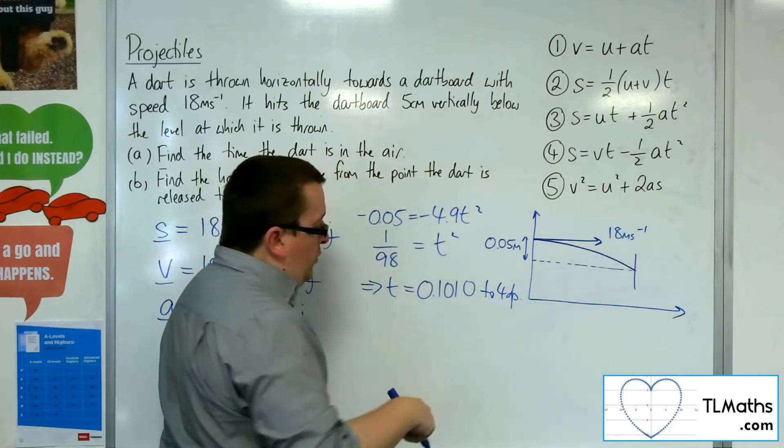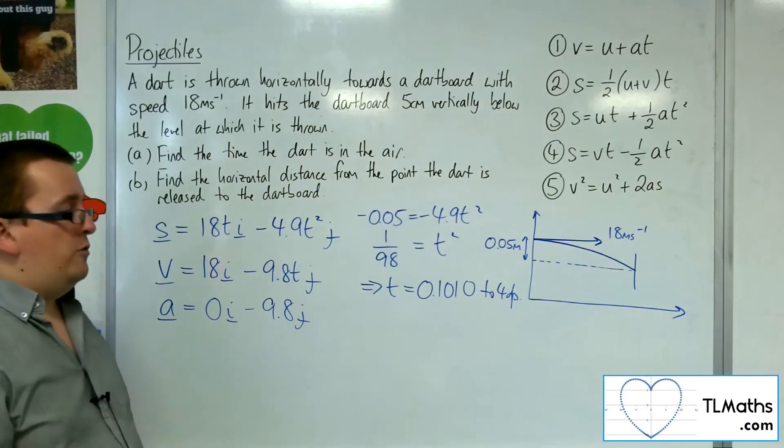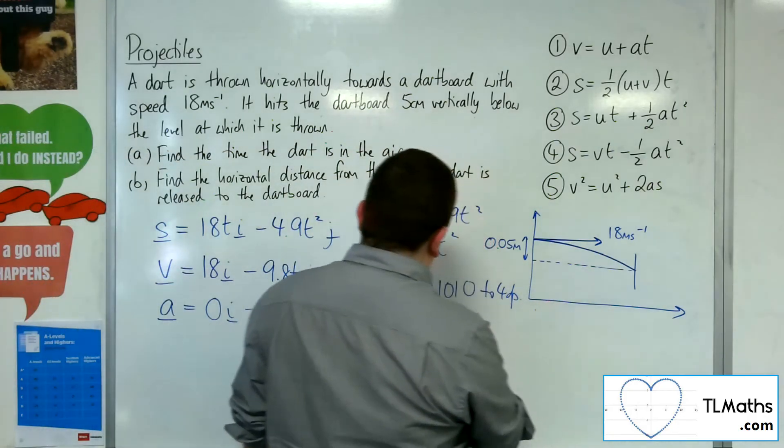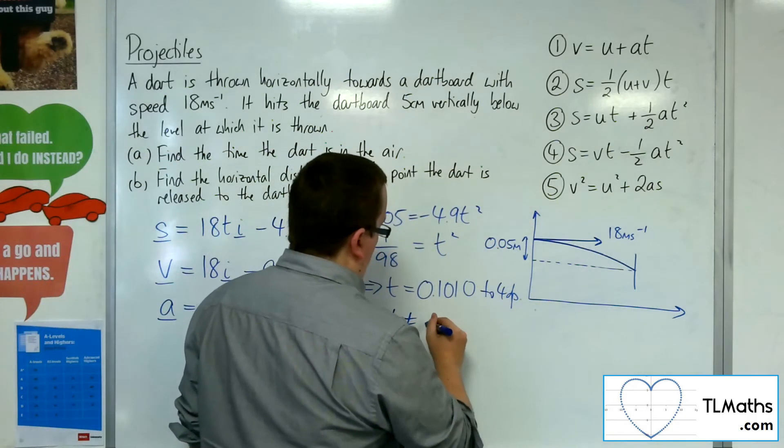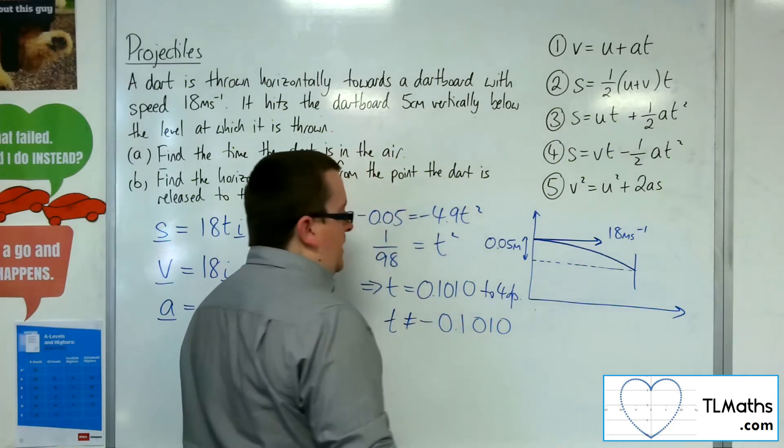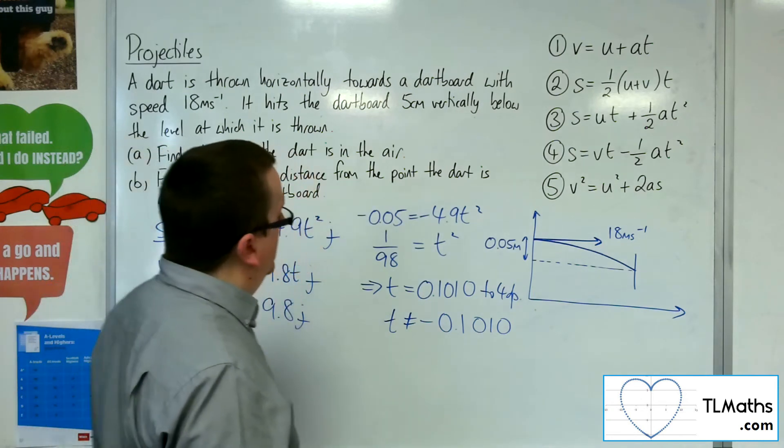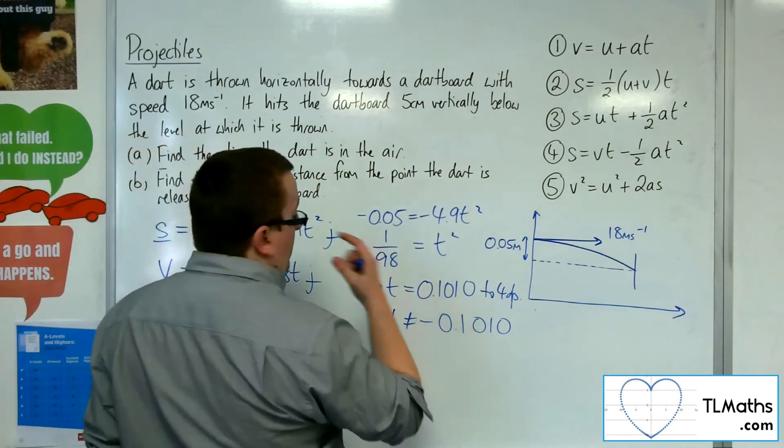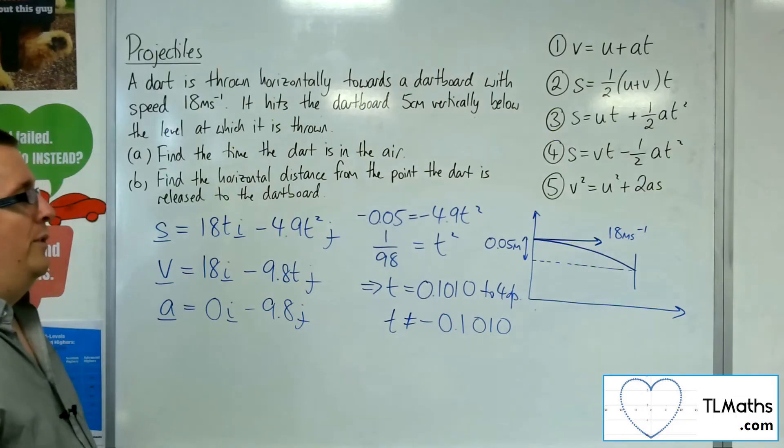Now I would also get a negative result because I'm square rooting, but clearly t cannot be equal to negative 0.1010 because time can't be negative. It's unphysical.